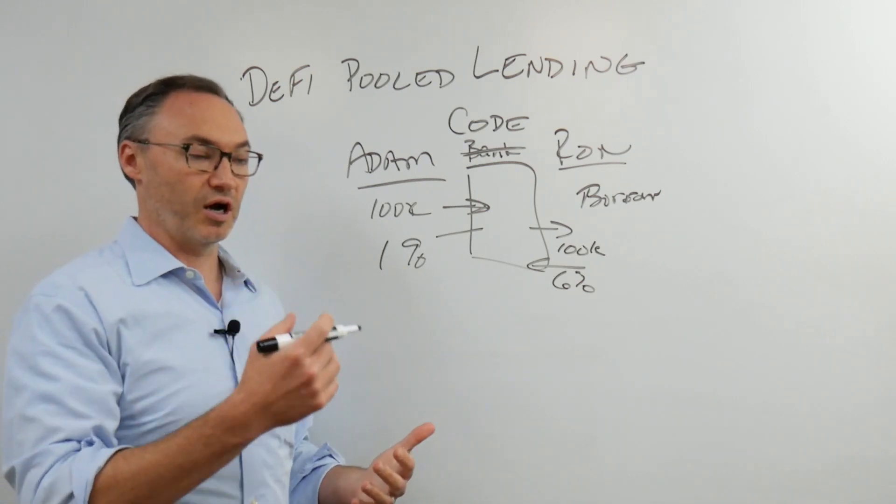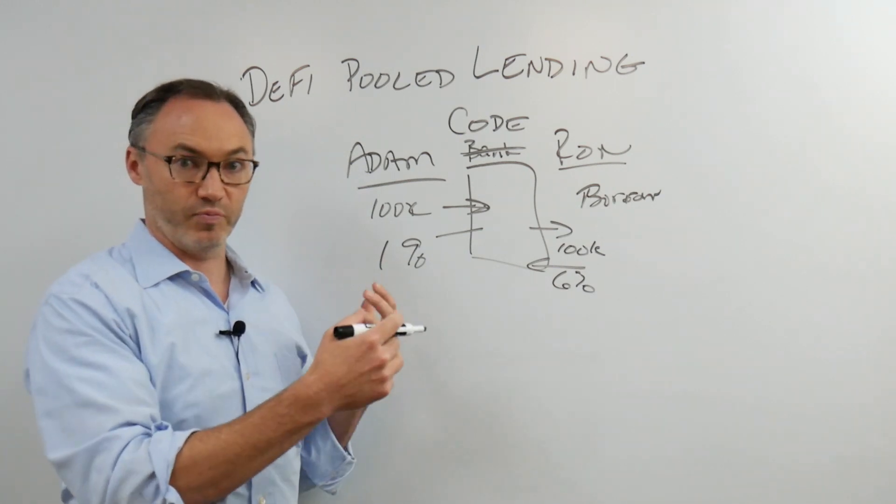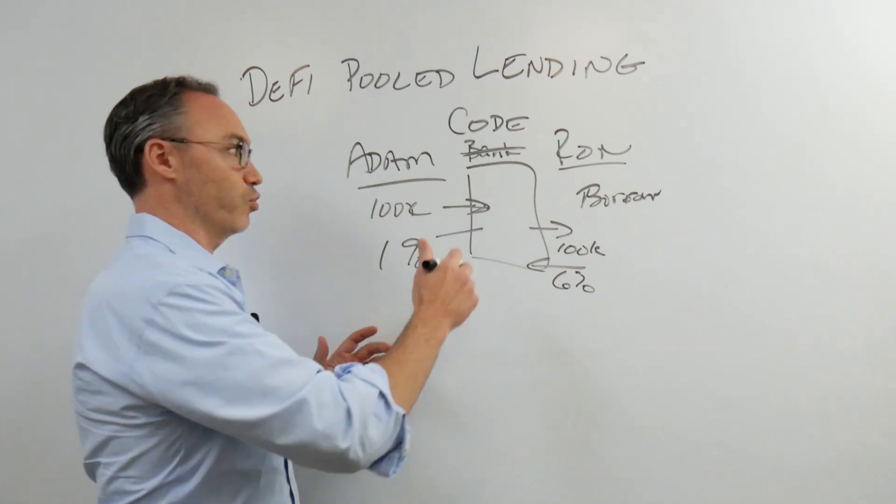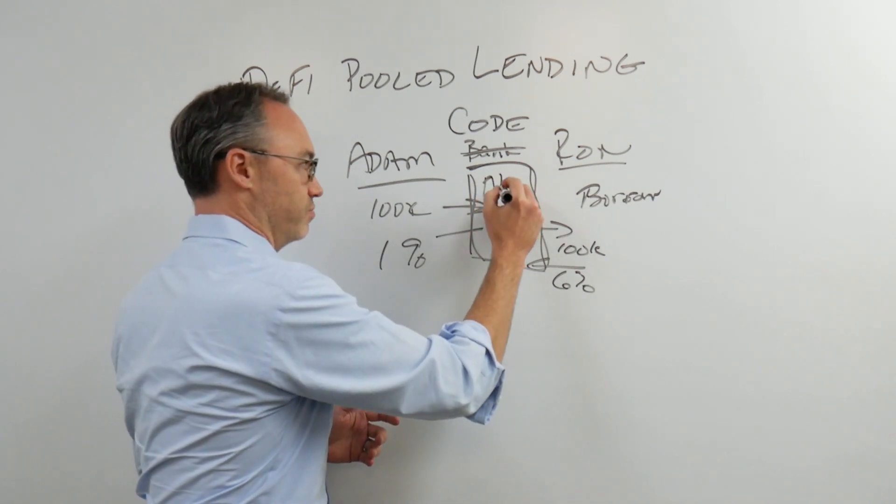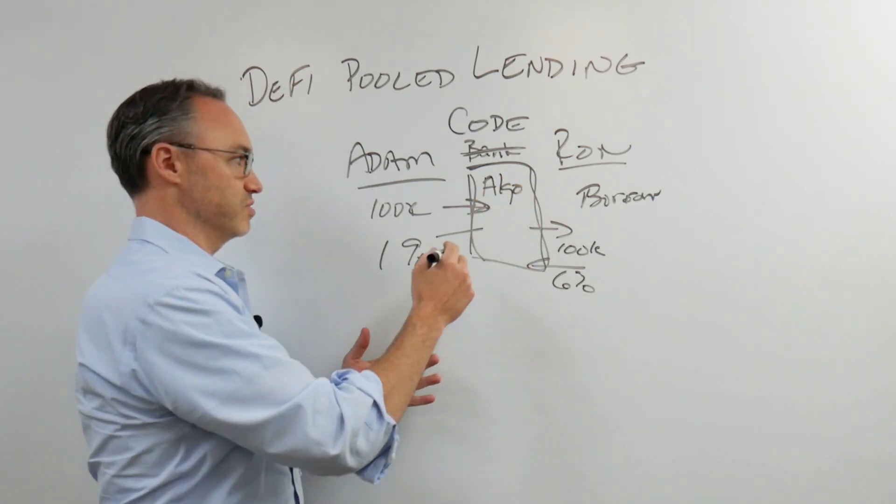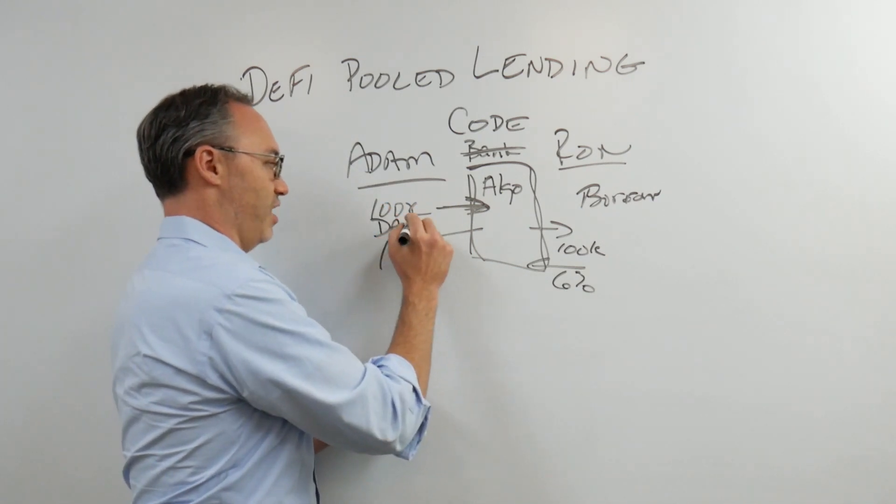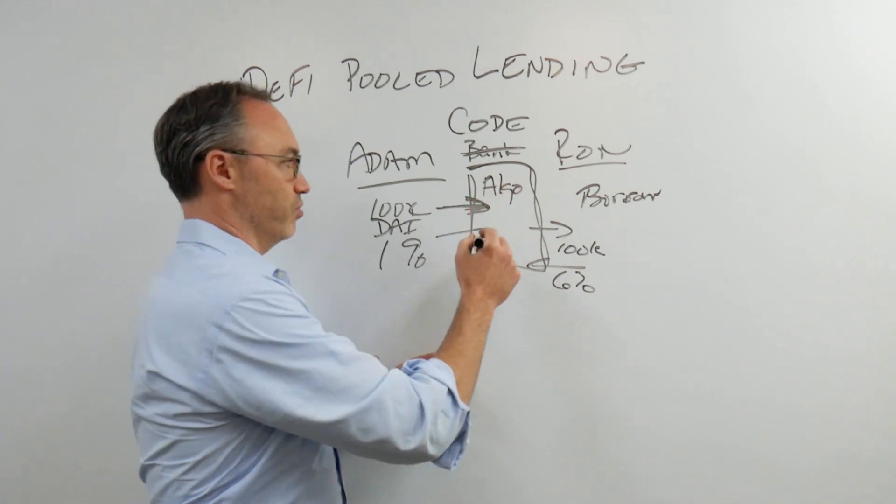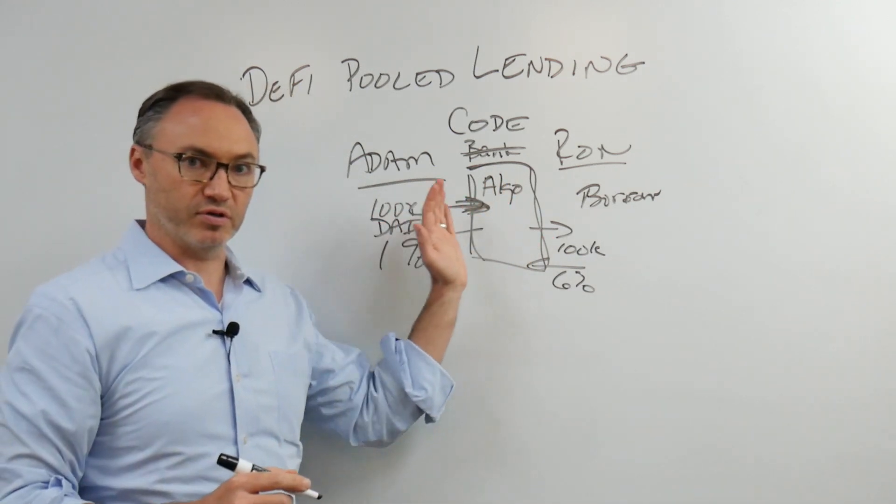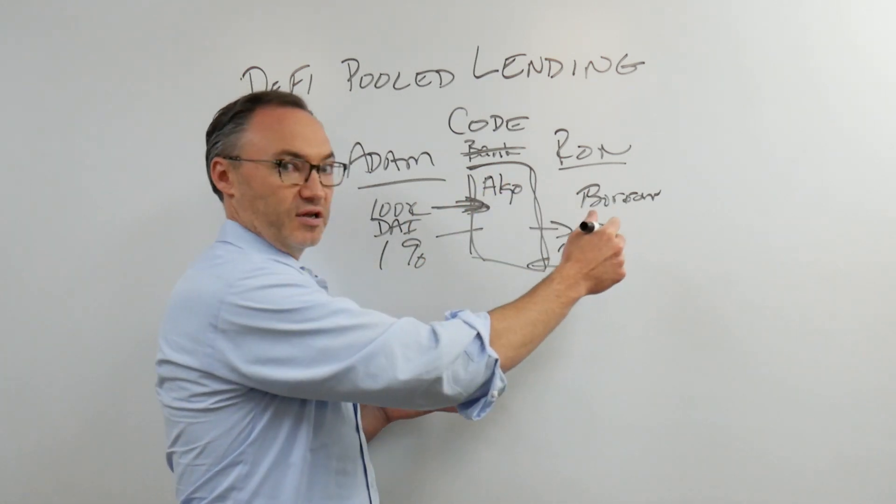So you see Compound, and BZX, and DYDX, and Aave, and other protocols out there that have said, look, we will write this protocol. And what this is going to have in here is essentially some algorithms that say you put in your cryptocurrency here. So in this case, maybe it's DAI. And this algorithm is going to determine, okay, we need to have a certain amount of cryptocurrency, of DAI coming in one side, so that we can lend it out.